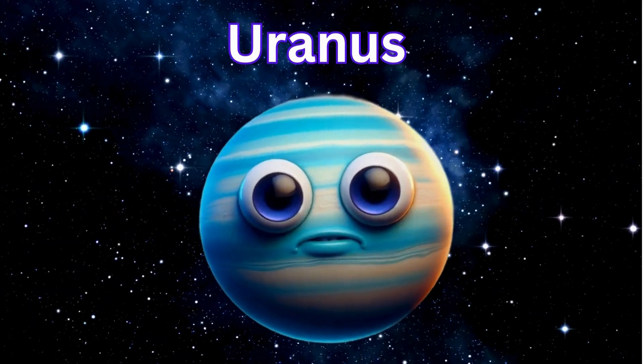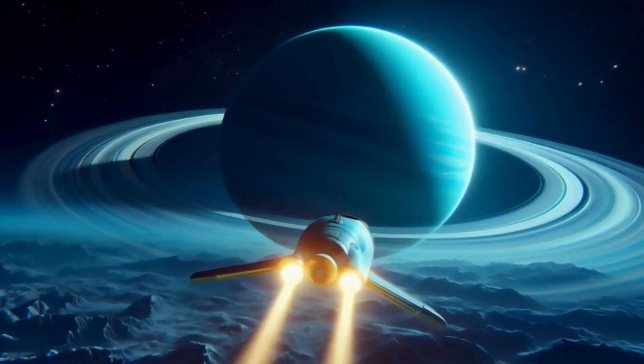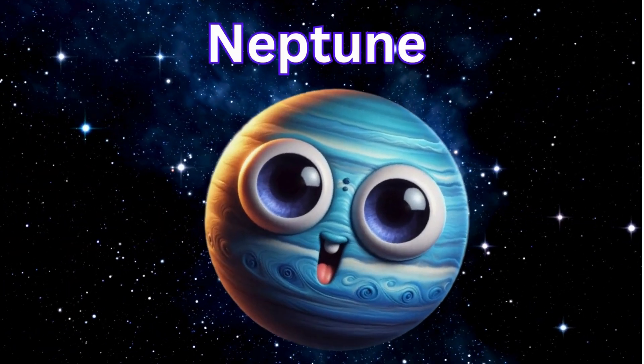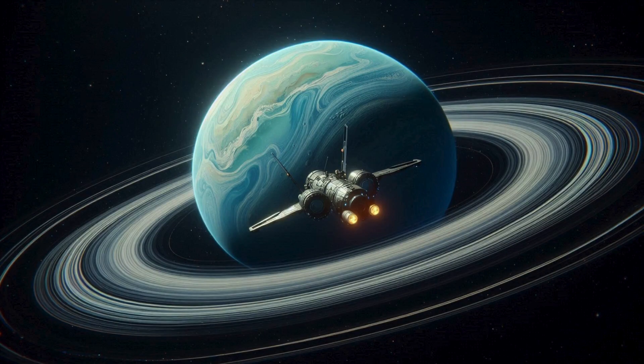Uranus spins on its side, an icy blue and frozen ride. Neptune's winds, they never slow, the farthest one with a deep blue glow.